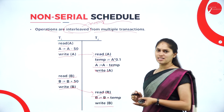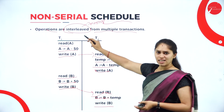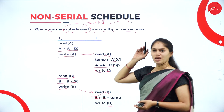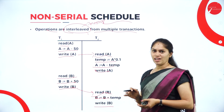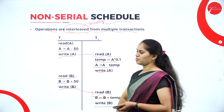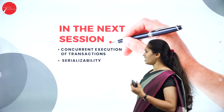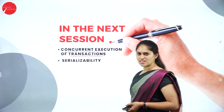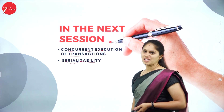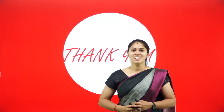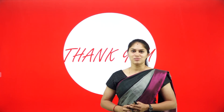In order to have concurrency control, we need to interleave transactions — but we must be very cautious when doing so. That concludes today's session. In the coming session, we will see concurrent execution of transactions again and also work on serializability. Keep learning, keep growing. Thank you.